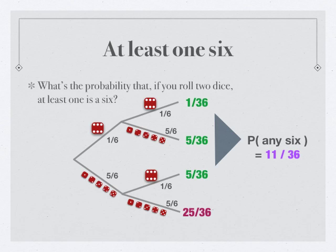But let's look at the bottom one. It's this path here, where first you roll a one through five, and then you roll another one through five. The probability of that is 25/36, and that is the probability that there is no six.